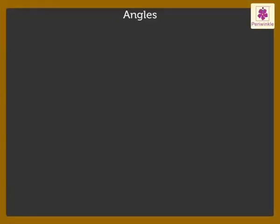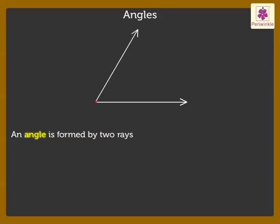let's revise what we already know about angles. Some basic points about angles are: An angle is formed by two rays that have a common end point.